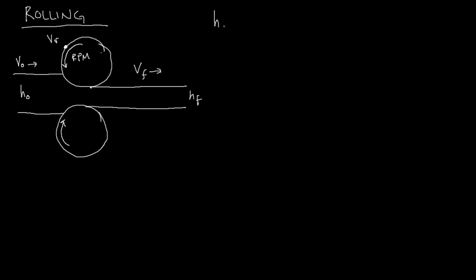The height of the original piece is greater than the height leaving the rollers. Interestingly, the velocity of the original plate is actually slower than the roller speed, and the rolling speed is slower than the speed of the plate exiting the roller. So the material is speeding up as it goes through — how can that be?